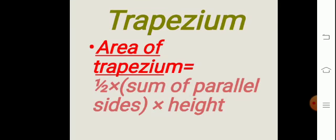Trapezium. A trapezium is a figure that has only one pair of parallel sides. To find the perimeter of a trapezium, we add all the sides. The area of a trapezium is equal to half into the sum of parallel sides into height.